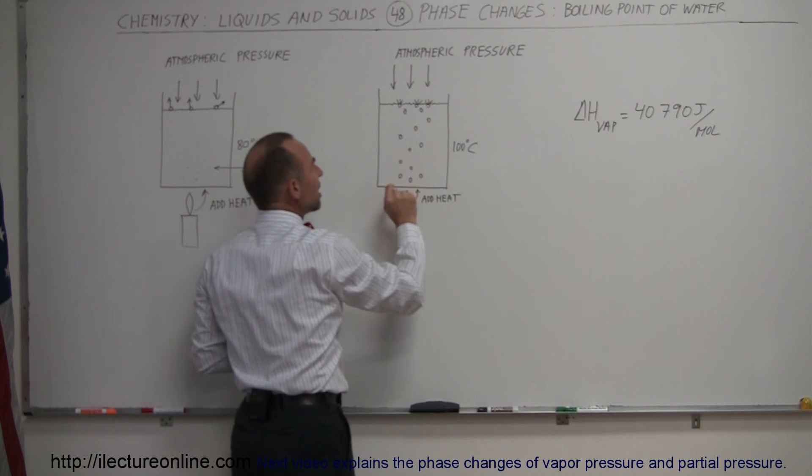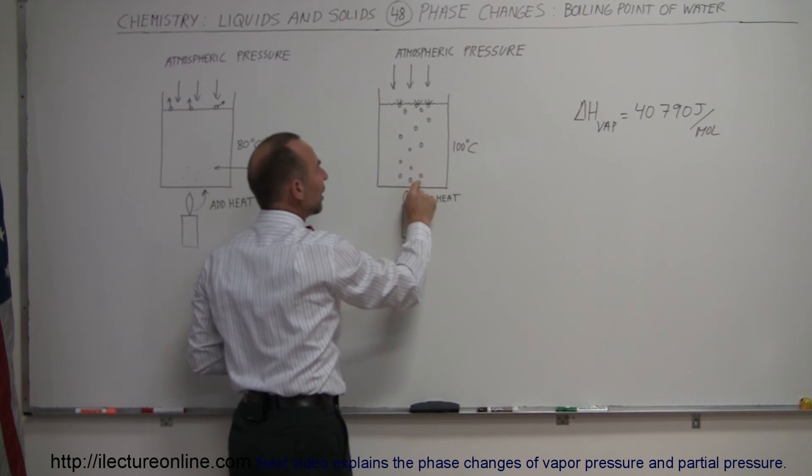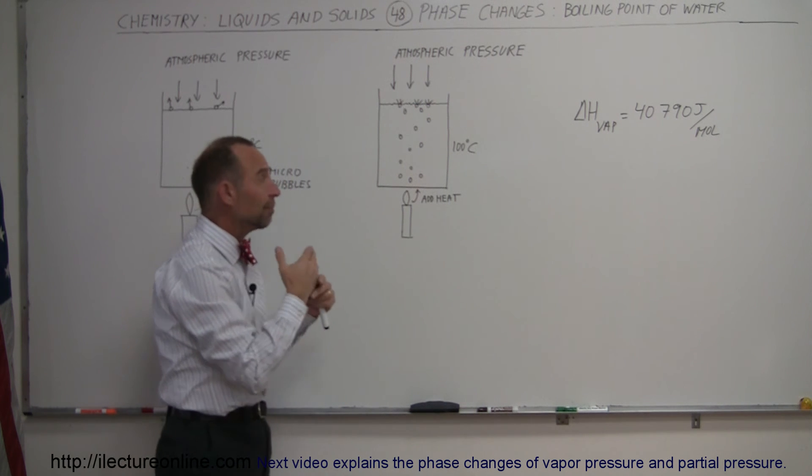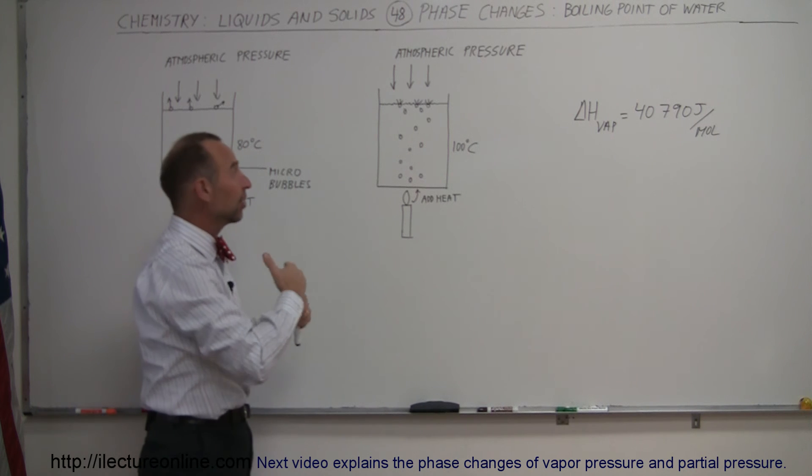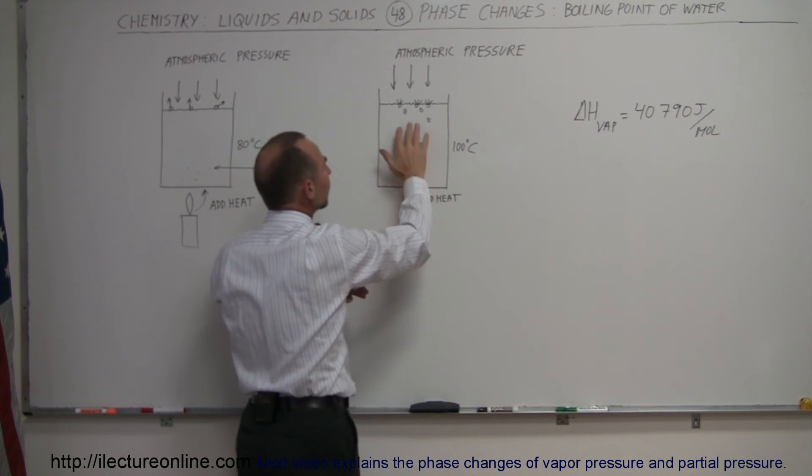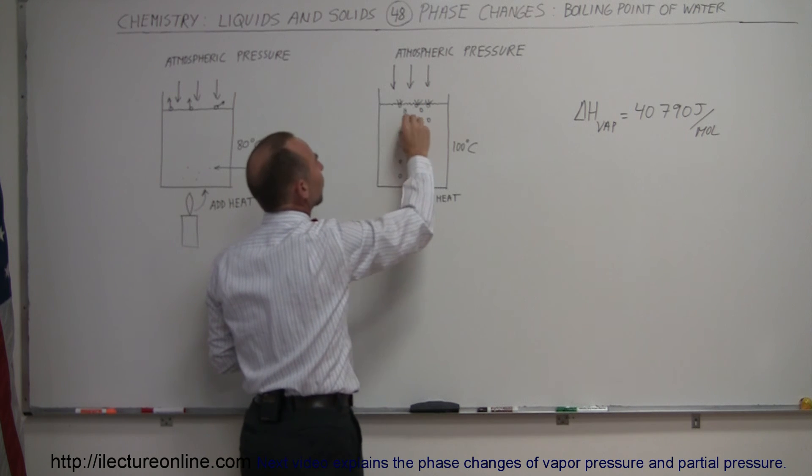Since the pressure inside is now equal to the atmospheric pressure - because the vapor pressure can be the same as atmospheric pressure at 100 degrees centigrade - the atmospheric pressure can no longer squish the bubbles. The bubbles go to the top and escape into the atmosphere.